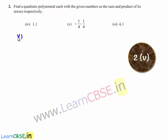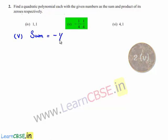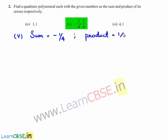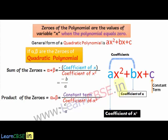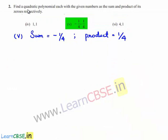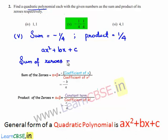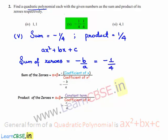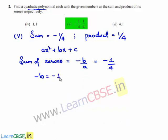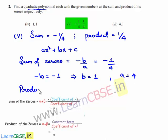Coming to the fifth bit, the given sum of the zeros is -1/4 and the product of the zeros is equal to 1/4. Let us assume the required quadratic polynomial to be ax² + bx + c. We know that the sum of zeros is equal to -b/a, and the given sum is -1/4. By comparison, -b = -1, so b = 1, and a = 4.